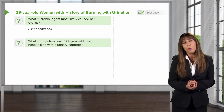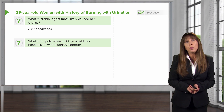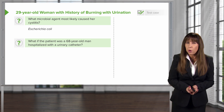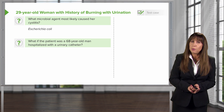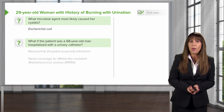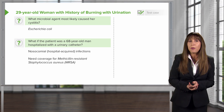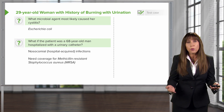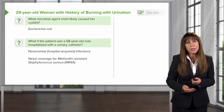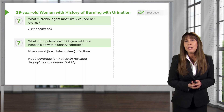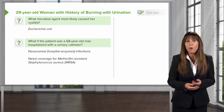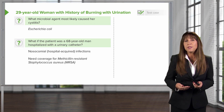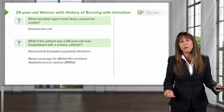What if the patient instead was a 68-year-old gentleman who was hospitalized with a urinary catheter? Would E. coli still be the number one cause? In that population, we have to think about nosocomial or hospital-acquired infections. Those patients may need coverage for organisms such as methicillin-resistant Staphylococcus aureus, or MRSA.